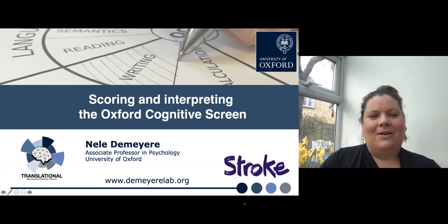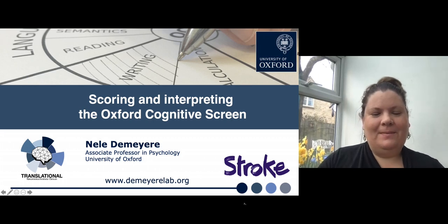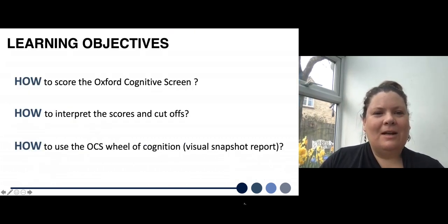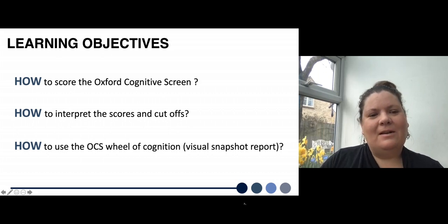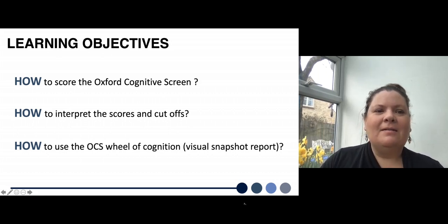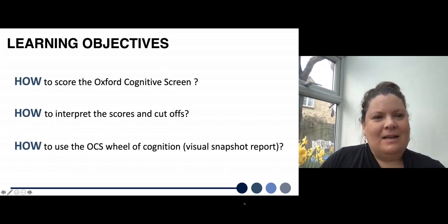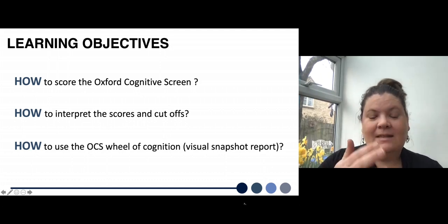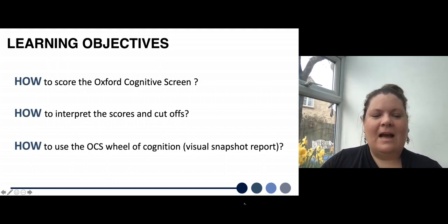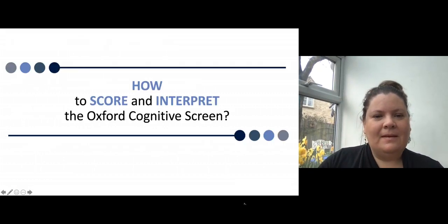Hi and welcome to this session on how to score and how to interpret the Oxford Cognitive Screen. The particular learning objectives for this talk are really about the scoring. You've seen a little bit before about the introduction, the background, and how to actually manage and move your papers around. This video is about how you then actually go on and score it, interpret the scores, and how you use the wheel to report it.